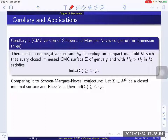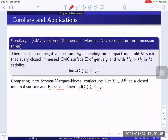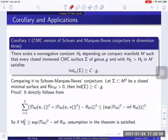Before going into the proof, I would like to compare this corollary to the Shen-Marques-Neves conjecture. That conjecture states: if sigma is a closed minimal surface in a three-dimensional ambient manifold with positive Ricci curvature, then the strong index is bounded below by C times G. Positive Ricci curvature is essential — one can easily construct a three-manifold with negative Ricci curvature where there always exists a stable minimal surface with infinitely large genus. In our corollary, we don't have any assumption on the ambient manifold; instead, we transfer the assumption to the mean curvature.